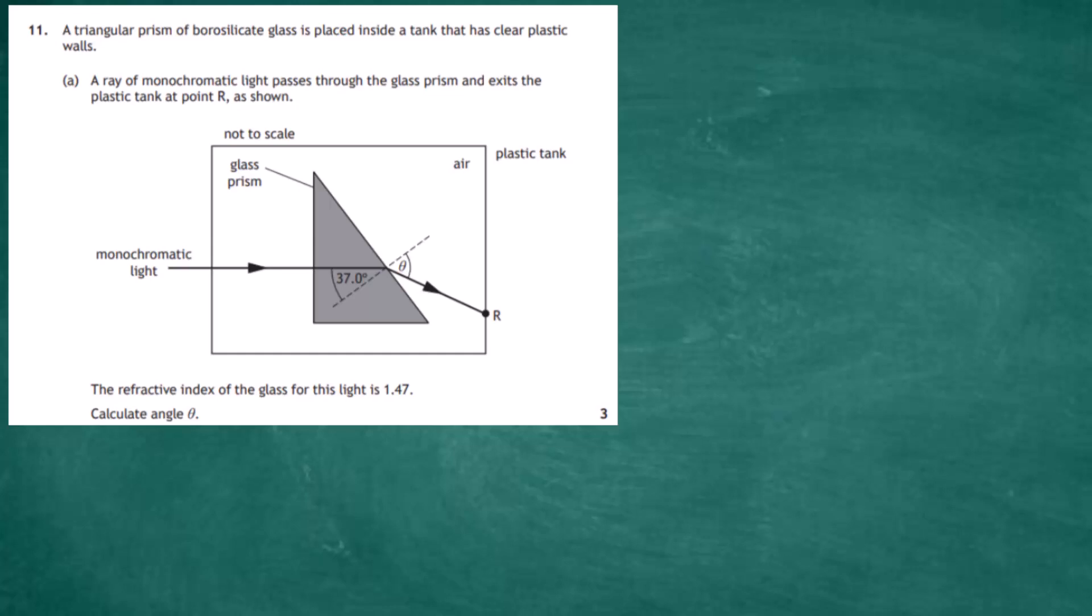The refractive index of the glass for this light is 1.47. For three marks, we have to calculate the angle theta. When we do this question, we know we're going to use Snell's law. Snell's law says that sine of theta in the air divided by sine theta in the glass should be equal to the refractive index of the glass, n.